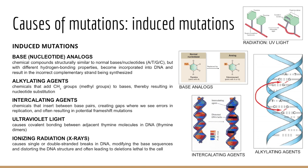UV light, while not as energetic as ionizing radiation, is highly mutagenic. Purines like adenine and guanine and pyrimidines like thymine and cytosine absorb UV light, which causes chemical bonds to form between adjacent pyrimidine molecules on the same strand of DNA. When we're talking about thymine in particular, this creates thymine dimers — two thymines right next to each other covalently bond, creating a bulky lesion that distorts DNA and can inhibit normal replication and transcription.